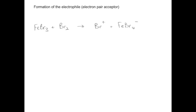So if we look at the mechanism now — we've got a very similar thing going on to before. The first step is to form the electrophile, the electron pair acceptor. I'm using FeBr3 here, but you could also use AlBr3 instead. FeBr3 reacts with a bromine molecule and forms a Br+ ion and an FeBr4- ion. The Br+ is going to be the electrophile.